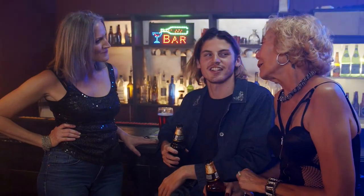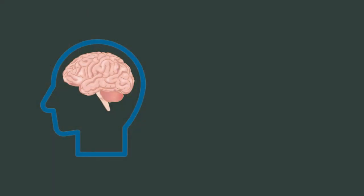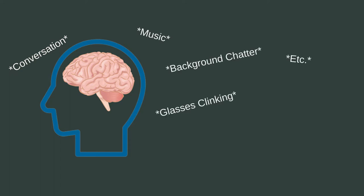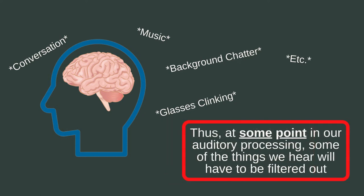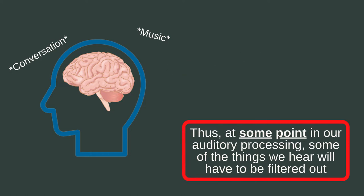These different theories all agree that initially we are bombarded with all kinds of stimuli. In our cocktail party example, we are bombarded with the conversation we're having, but also by all other background noise. However, because of the limitations in our cognitive capacity, we are unable to process everything at once. This means that at some point in our auditory processing, some of the things that we hear will have to be filtered out.